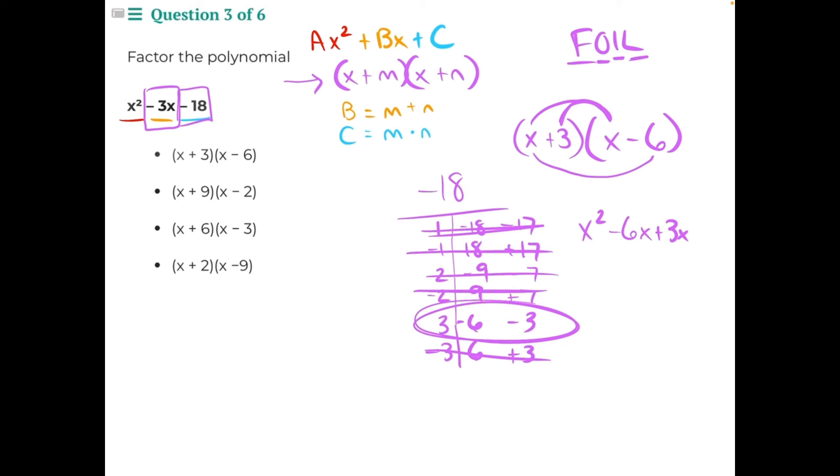And then finally, the last numbers multiplied together, 3 times negative 6 would give us negative 18. So then we simplify, negative 6x plus 3x would give us negative 3x.